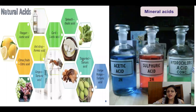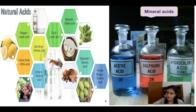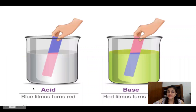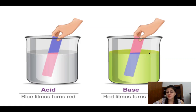So what did we learn about acids? Basically, what acids are, their physical properties, their types, strong and weak acids, their uses, and natural versus mineral acids. We also talked about the litmus paper test: acid turns blue litmus paper red, and base turns red litmus paper blue.